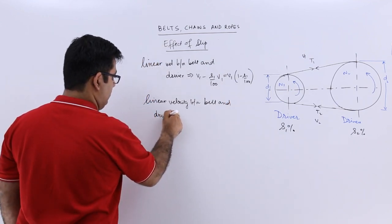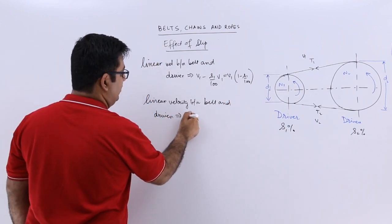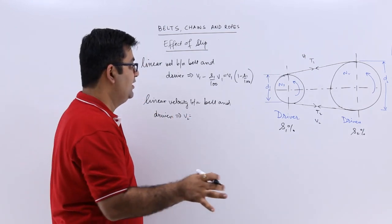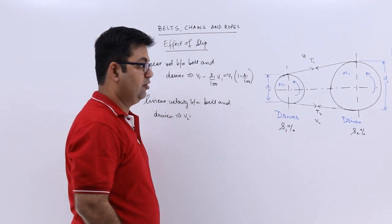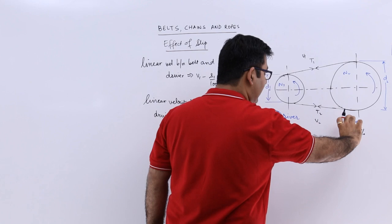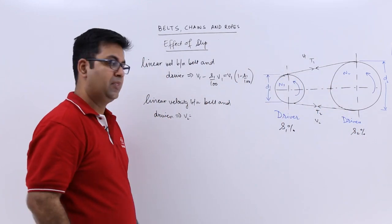But v2 is not equal to v1 now in this case, because this much is entering, or you can say this much velocity is being brought by the belt to the driven pulley.